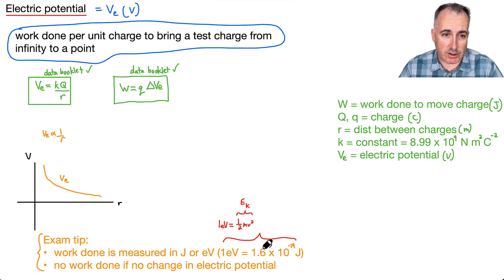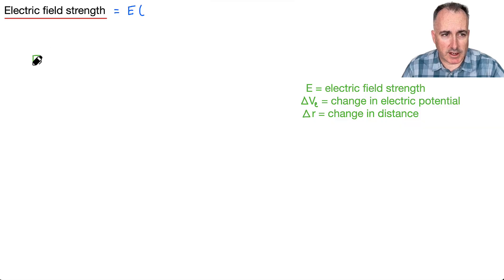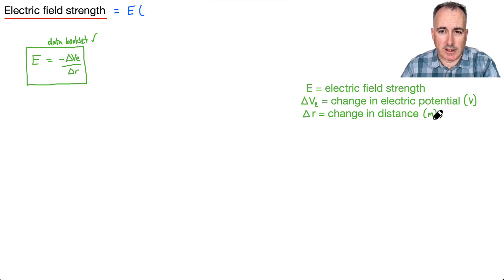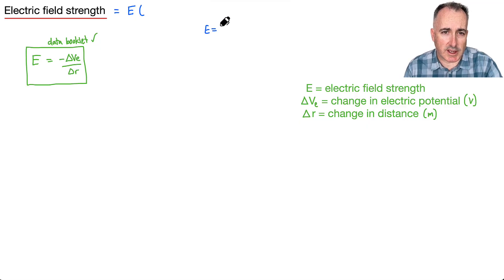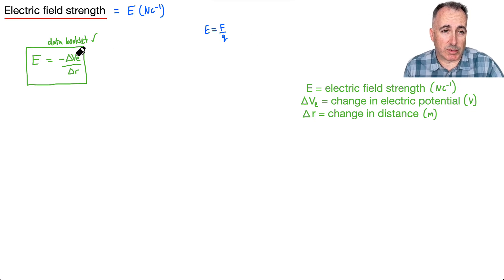Remember that if you have no change in electric potential — delta Ve equals 0 — then of course you have no work done. Now let's define electric field strength, written as capital E, measured in newtons per coulomb. The equation is E equals minus delta Ve over delta R. Delta Ve is a change in electric potential in volts, and delta R is the change in distance in meters. Since E also equals F over Q, the units are newtons per coulomb — though an equivalent unit is volts per meter.